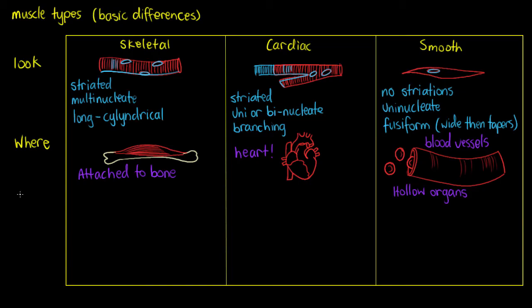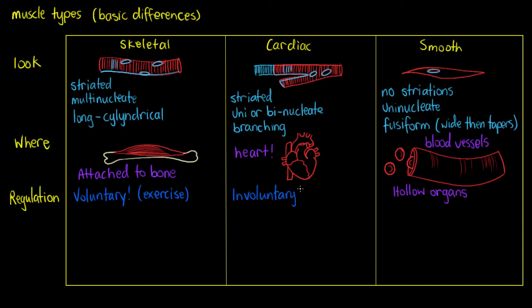How do we regulate these cells — are they voluntary or involuntary? Skeletal muscle is voluntary: we have to consciously tell it to contract. Cardiac muscle is involuntary; we don't tell our heart how fast to beat — it determines its own rate based on stress, regulated by pacemaker cells within the heart. Smooth muscle is also involuntary. We don't control digestion, waste elimination, or blood flow — our body manages those automatically.